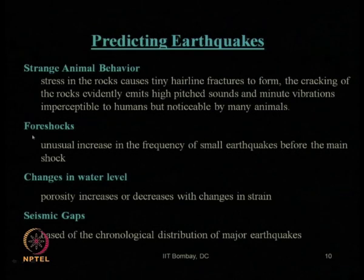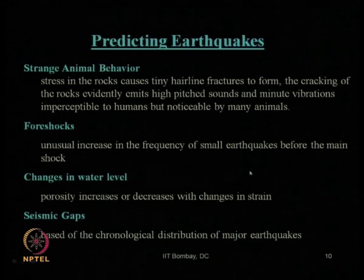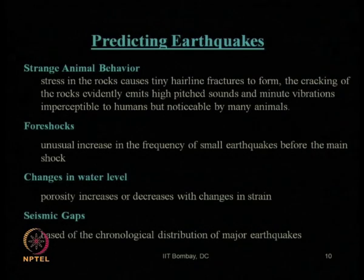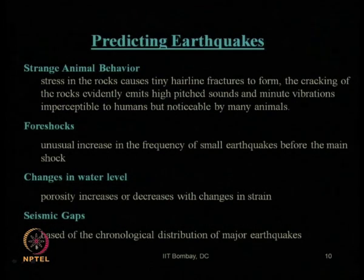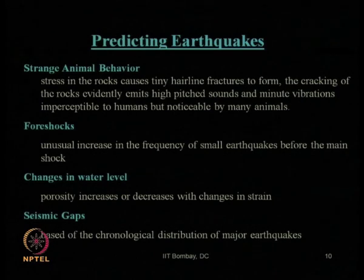Foreshocks can indicate a future earthquake: there can be an unusual increase in the frequency of small magnitude earthquakes before a main or major earthquake arrives. That can be an indication that one major earthquake is going to occur, but again we cannot say what the exact future date and magnitude of that earthquake will be. Changes in water level, porosity, strain, and seismic gaps based on the chronological distribution of major earthquakes can give a range of expected earthquakes, but not the exact one.